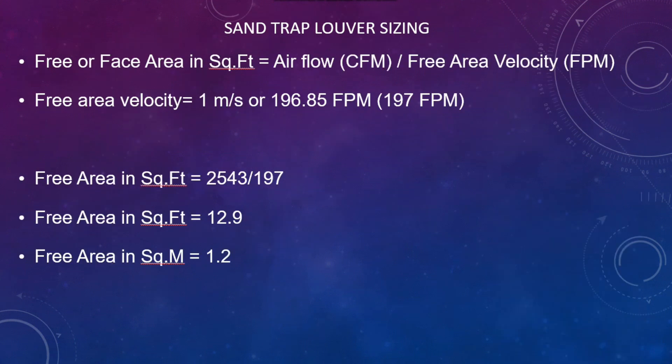The formula is: free air face area in square feet equals airflow in CFM divided by free area velocity in feet per minute, and the free area velocity is equal to 1 meter per second or 197 feet per minute.